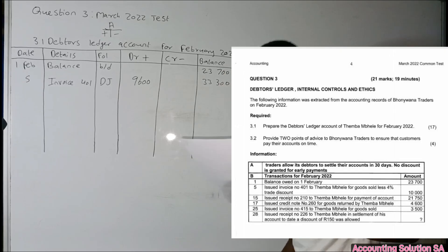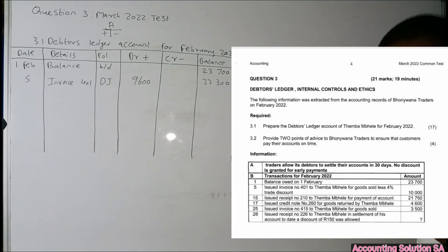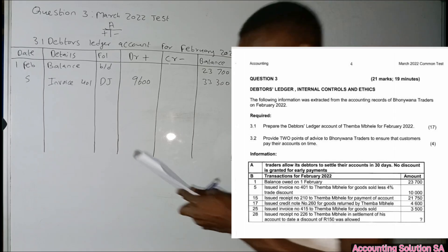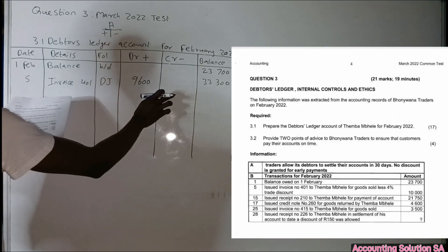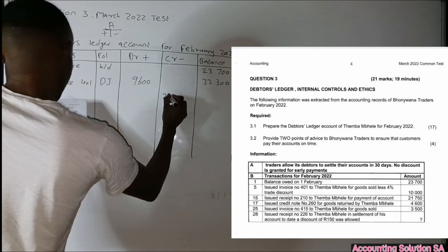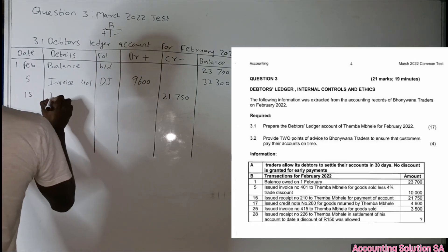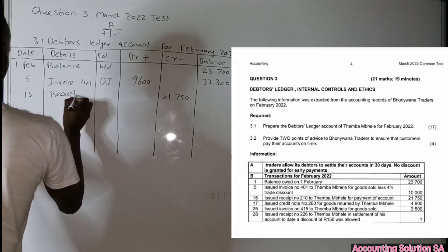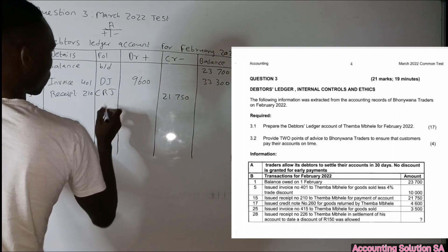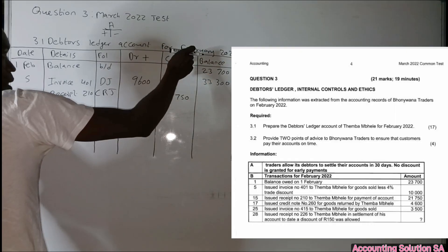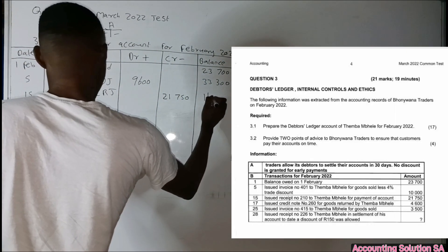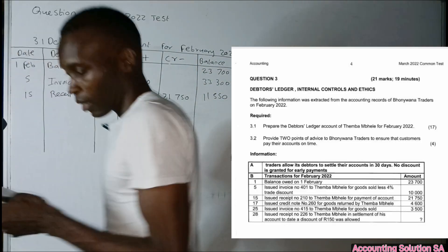Next, Receipt 210 on 15 February: Timber Bale made a payment to their account of 21,750. Since they are paying their debt, it is a minus — we record it on the credit side under cash receipts journal with the date 15 February and receipts number 210. The new balance becomes 33,300 minus 21,750, which gives us 11,550.